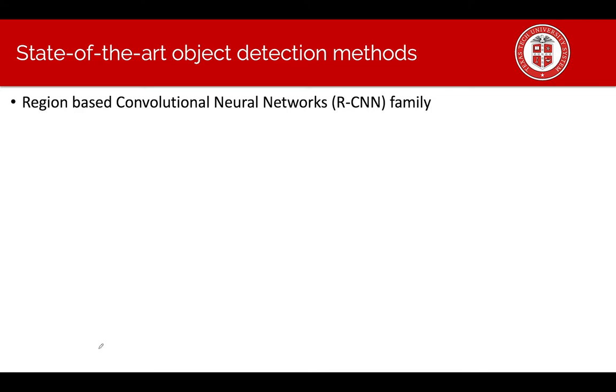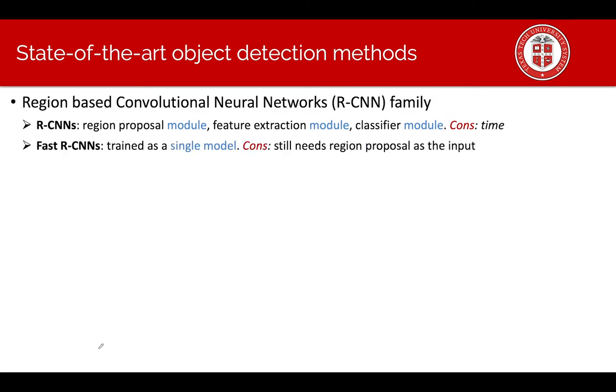The first is region-based convolutional neural network. R-CNN includes a region proposer model, feature extraction model and classifier model. Its main disadvantage is about time. Fast R-CNN trains as a single model, but still has the disadvantage of needing to provide region proposals as input.